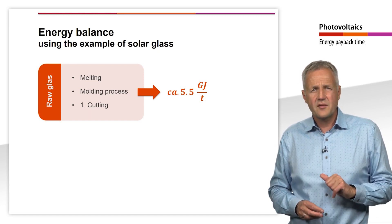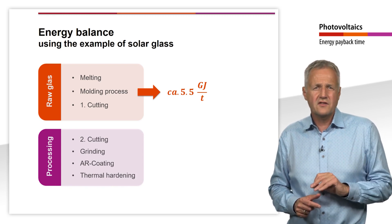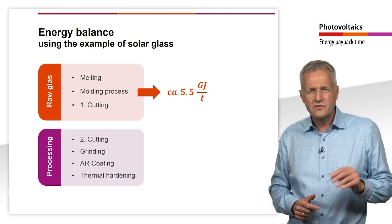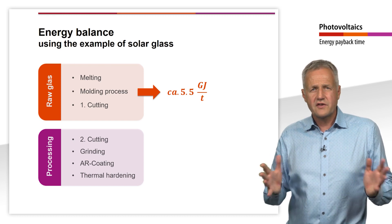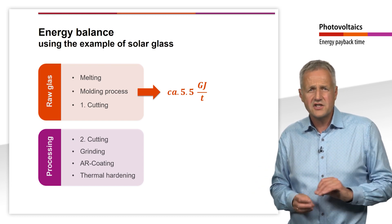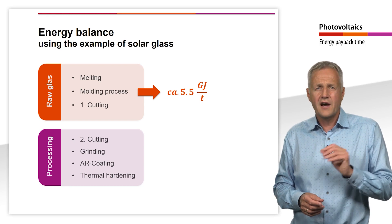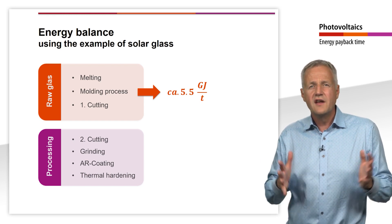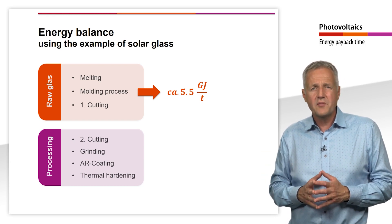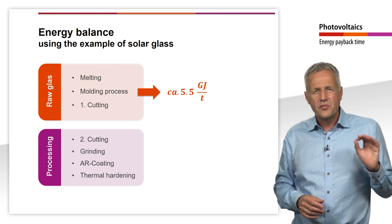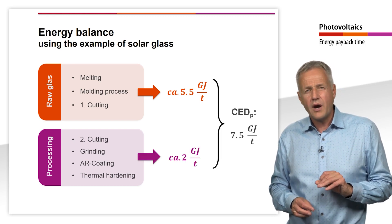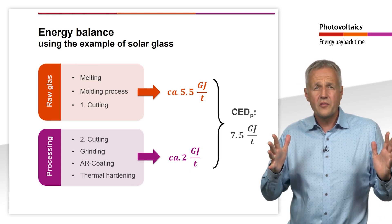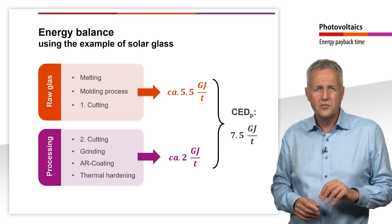Approximately 5.5 GJ per tonne are required for the production of raw glass. In a second production step, the raw glass is cut to the final dimension of the solar modules, e.g. 1.7 to 2 square meters. After a grinding process, a washing cycle and an anti-reflective coating, another energy-intensive step follows: thermal hardening. For this purpose, the modules are heated up to approximately 640 degrees Celsius and then cooled down in a shock-like manner with a very strong airflow. The processing of the solar glass thus requires about 2 GJ per tonne, including losses. In sum, the cumulative energy demand is 7.5 GJ per tonne.